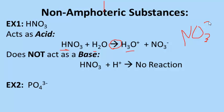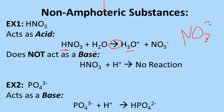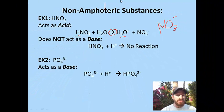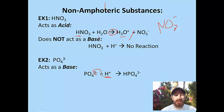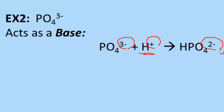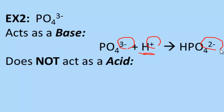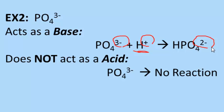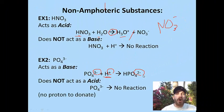Now let's look at something that acts as a base but not an acid: phosphate. Phosphate has a negative three charge, so it is great at accepting protons and acts as a base. Phosphate plus a proton gives us hydrogen phosphate. The one-way arrow is because we've added a strong acid. The net charge on each side is equal: minus three plus one equals minus two, matching the product side. But phosphate does not act as an acid — it has no protons to donate, so there is no possible reaction.